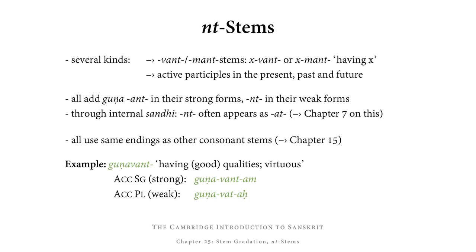Among the various kinds of nouns that have stem gradation, we have NT stems. There are several kinds: first, want or mant added to a noun — so ex-want or ex-mant would mean 'having x' — and then we have the active participles of the present, past, and future. All of these add guna-ant in their strong forms and nt in their weak forms. Through internal sandhi, this weak nt often appears as at. If you don't remember how this works, go back to Chapter 7 on nasals between consonants.